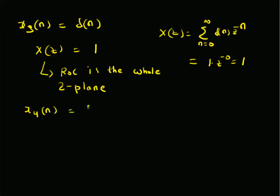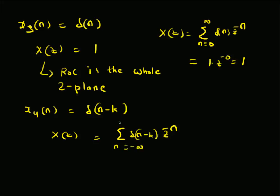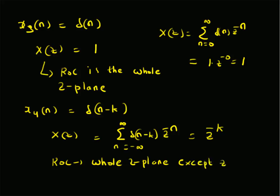For a shifted unit sample delta(n − k), X(z) equals the summation of delta(n − k) z to the power minus n from n equals minus infinity to plus infinity. Since delta(n − k) is nonzero only at n equals k, this equals z to the power minus k. This function converges for all values of z except z equals 0, so the ROC is the whole z-plane excluding the origin.